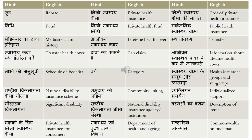The first word is 'choot' which means rebate. Rebate is nothing but something like a discount or a concession. 'Niji swasthya bima' means private health insurance — 'niji' is private, 'swasthya' is health, and 'bima' is insurance. 'Niji swasthya bima ki lagat' means the cost of private health insurance — 'lagat' is cost. 'Nidi' is fund, so 'niji swasthya nidi' is private health fund.